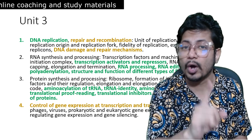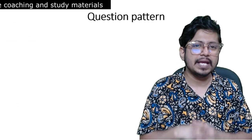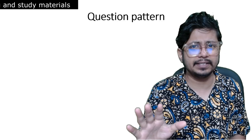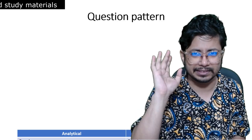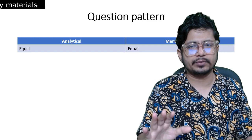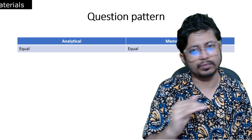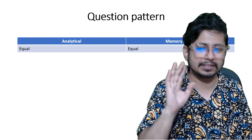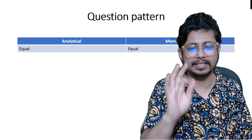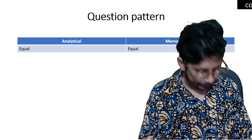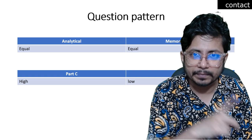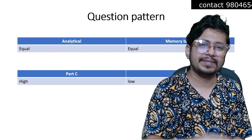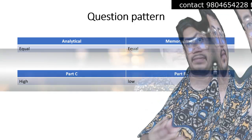Now let's move on to the question pattern type — very very important. I analyzed 10 years of CSIR NET question papers to give you this insight. The analytical questions and memory-based questions asked from Unit 3 are almost equal. So you need as much memory as analytical skills to answer the questions. There will be more Part C questions than Part B questions in CSIR NET Life Science Unit 3.